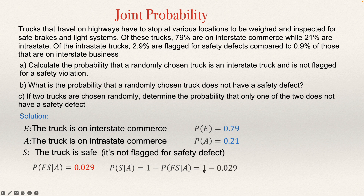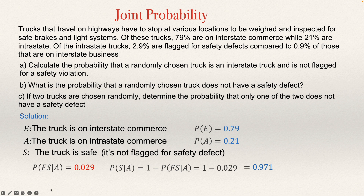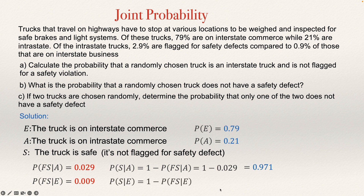There is a 0.9% probability of being not safe, given that it's on interstate business. So the probability of being flagged for a safety violation given interstate commerce is 0.009. And 1 minus this will be the probability of being safe given interstate commerce, which is 1 minus 0.009, giving us 0.991.